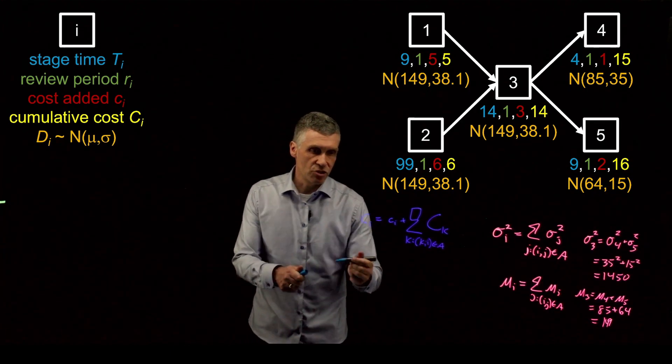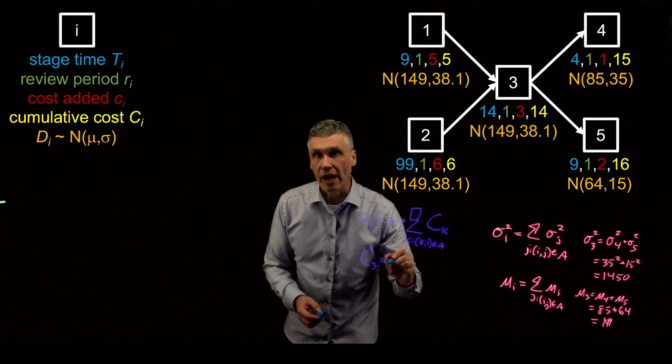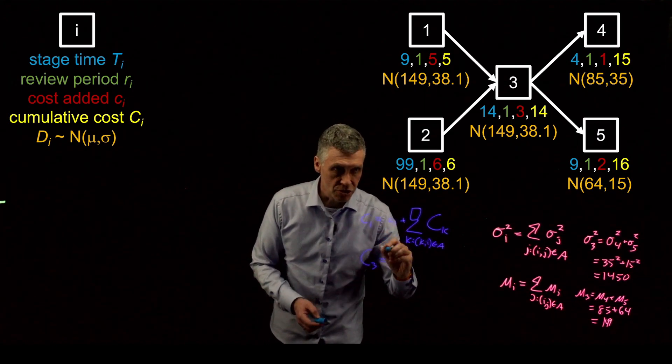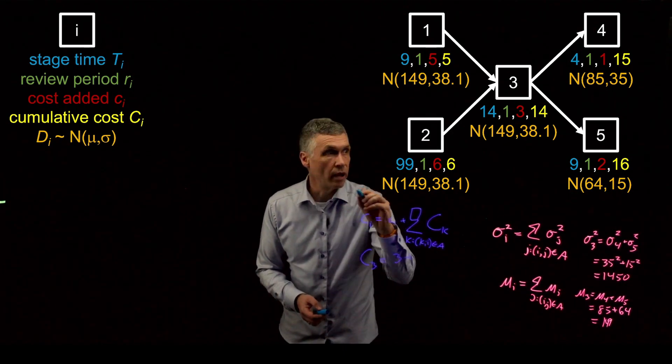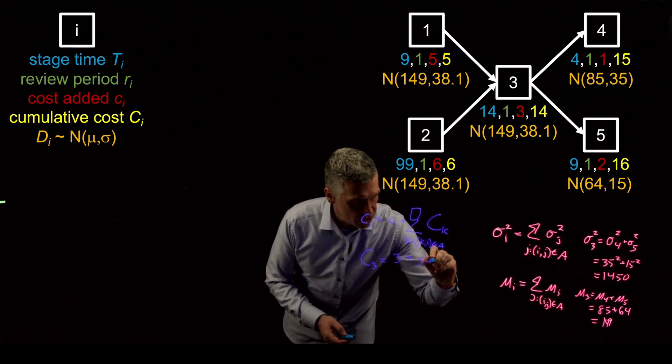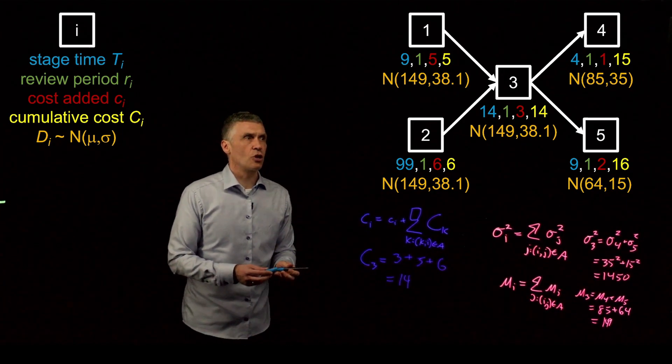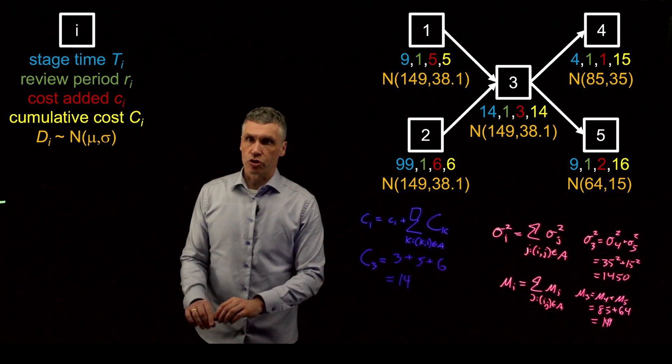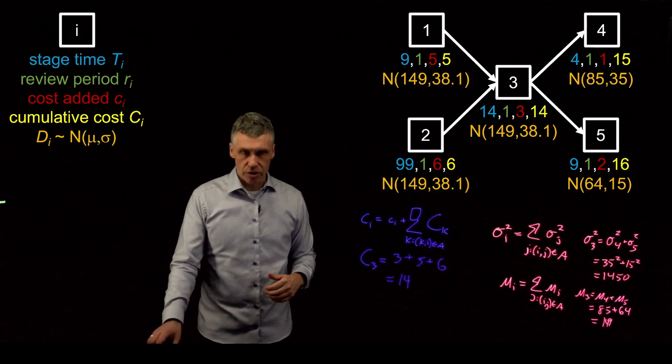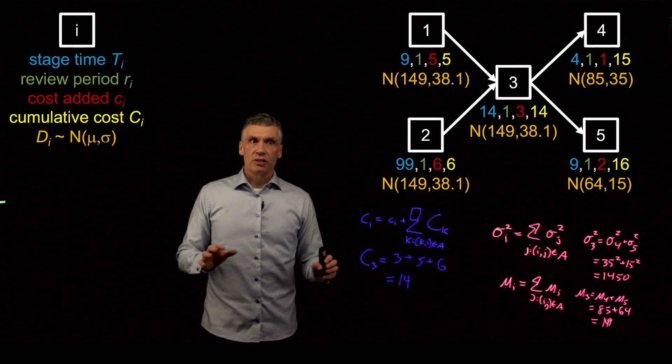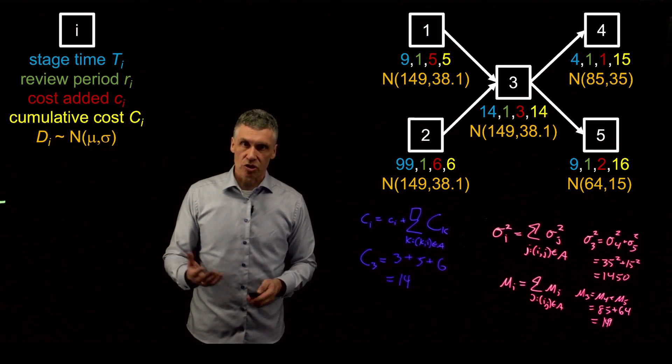And then, for a stage like C3, capital C3, that is going to equal the direct cost added at stage three, which I can just look over there and see is three, plus the C1, the cumulative cost of stage one, which is five, plus the cumulative cost of stage two, which is six, and that equals 14. So, here again, the cumulative cost just transmits through the network from the raw materials out to the finished good stages. So, once we have this, we have all of the parameters that are required to optimize the safety stock levels in the supply chain.